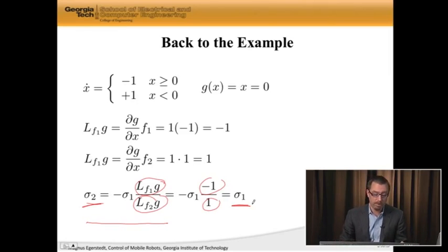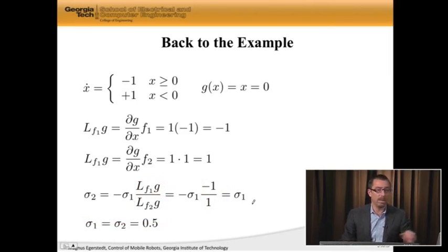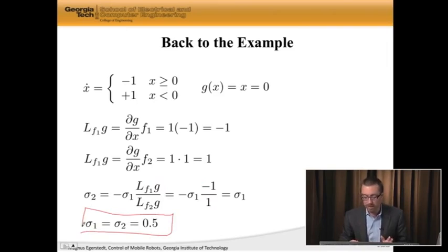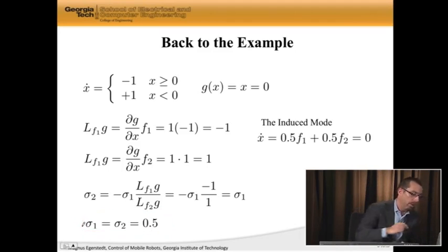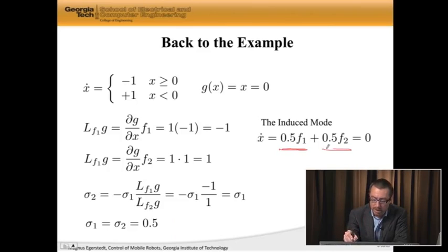Rather simple, right? But what are they? Well, recall that they need to sum up to both 1, which means that they both have to be a half. What this actually means then is that we can compute what the induced mode, the sliding mode, actually is. Well, I take sigma 1 times f1, which is half of f1, and then I take sigma 2 times f2, which is half of f2.